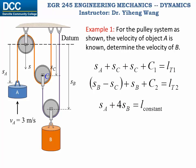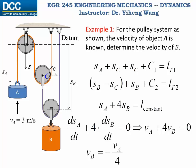And now step five, we differentiate this equation, and then we get VA plus 4VB equals to zero, so VB equals to negative VA divided by four, and that is 0.75 meter per second, pointing downwards.